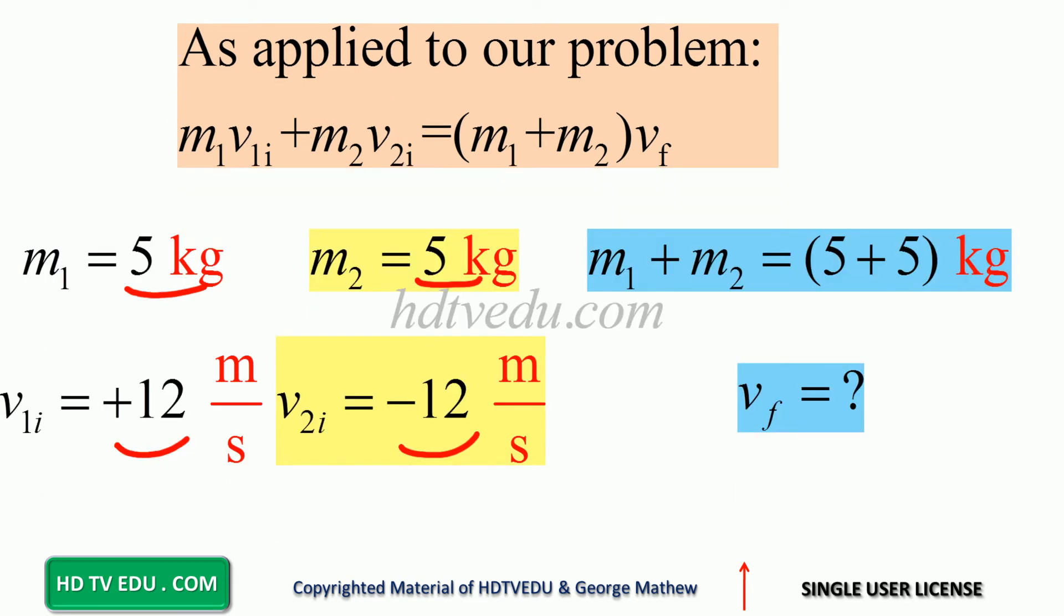The momentum of m1 before collision is 60. The momentum of m2 before collision is negative 60. And what happens to the total mass? 5 plus 5 times v final.